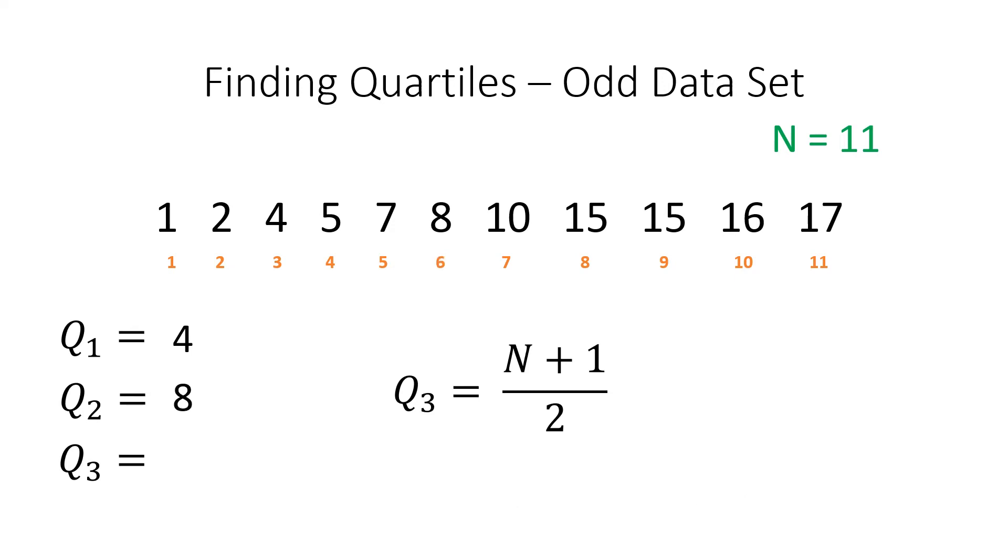We will use the same method we used to find Q1 to find Q3. We exclude the median. Notice how we are now concentrating on the right side of the data set. This will change our position numbers. Our n is now equal to 5. 5 plus 1 gives us 6, and 6 divided by 2 gives us 3. As with Q1, the 3 we just calculated refers to the position. Q3 is equal to 15.